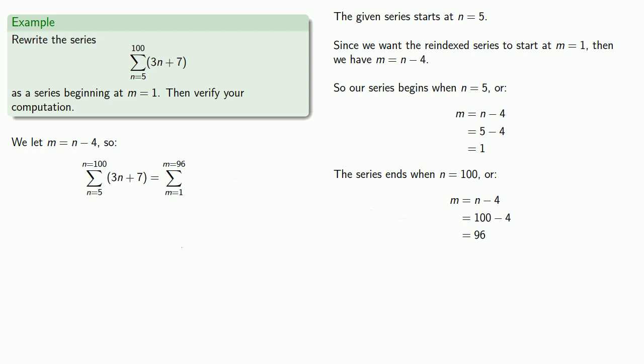Finally, since m equals n minus 4, then n equals m plus 4. So the terms of our series, 3n plus 7, can be rewritten in terms of m as 3m plus 19.